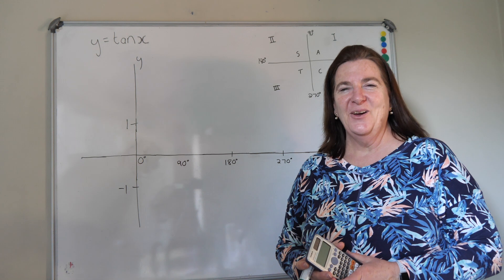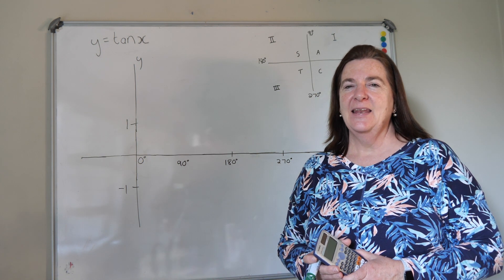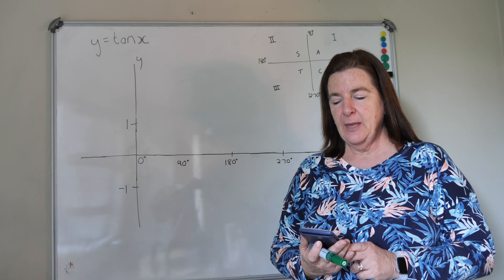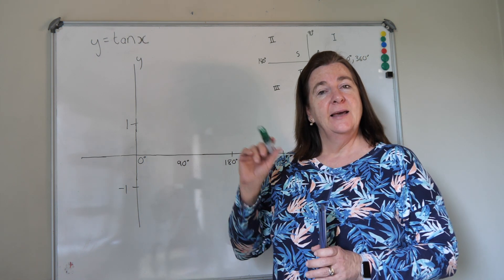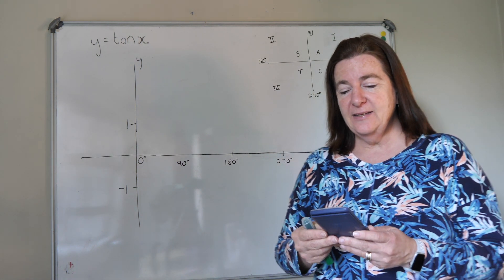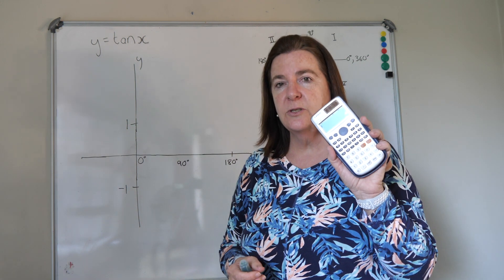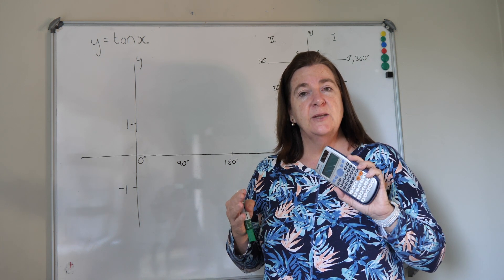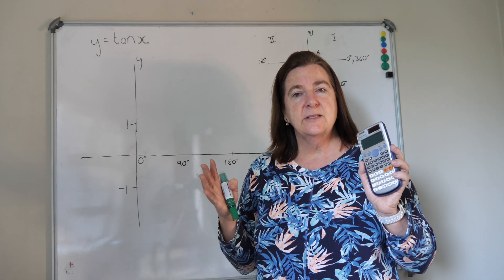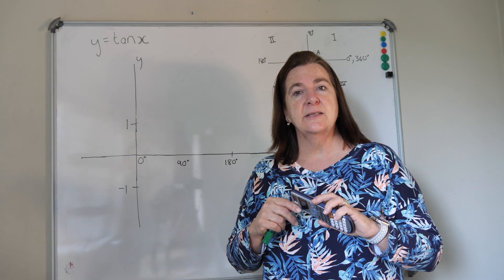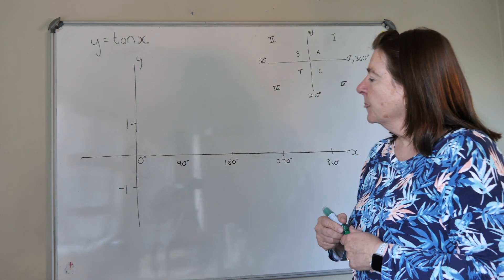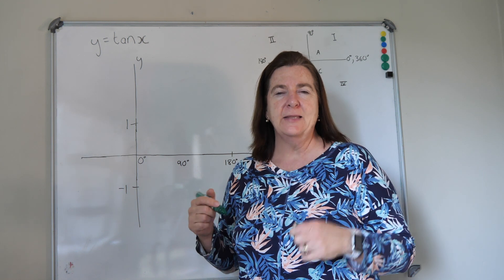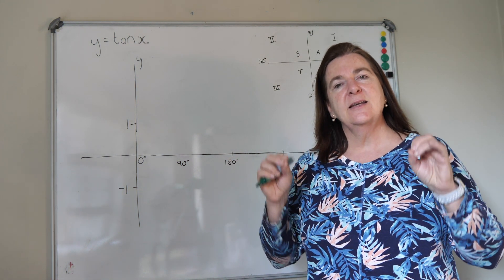Now we move on to the tan function, the last one. Sine and cos were very similar — just 90 degrees out of sync. Tan does its own little curve; it's completely different. When you use your calculator, you'll notice that at 90 degrees it gives you a maths error, and 270 also gives you an error. This means the tan of 90 degrees is undefined — it doesn't exist. And the tan of 270 also doesn't exist. So at those degrees, we draw an asymptote, because the graph gets very, very close but doesn't exist there.